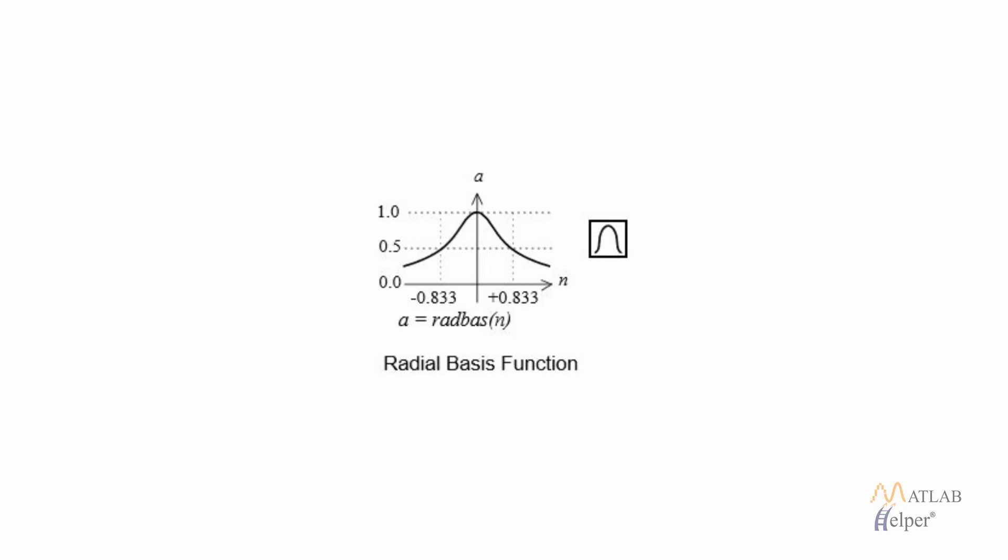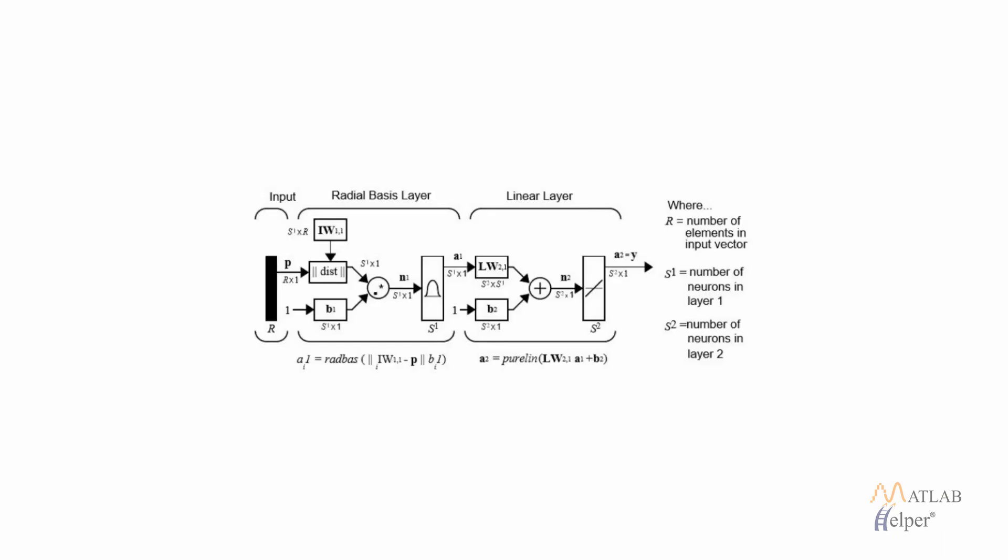This is the formula of our radial basis function. After passing through the radial basis layer, we have our second layer as the linear layer. This is the same as in the case of the multi-layer perceptron neural network.